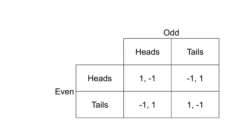The next game, called Matching Pennies, involves two players, Even and Odd, who each have a penny. Each player must select one side of the penny and simultaneously show the penny to the other player. If the pennies match, Even wins. If they don't match, Odd wins. What are the Nash equilibria?